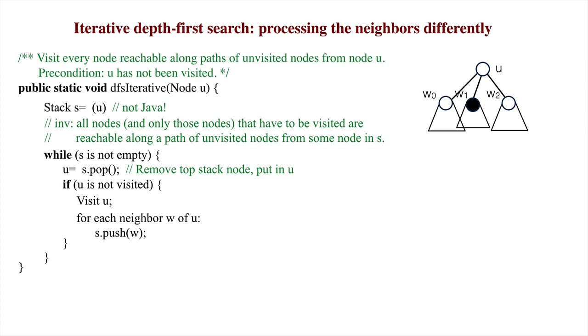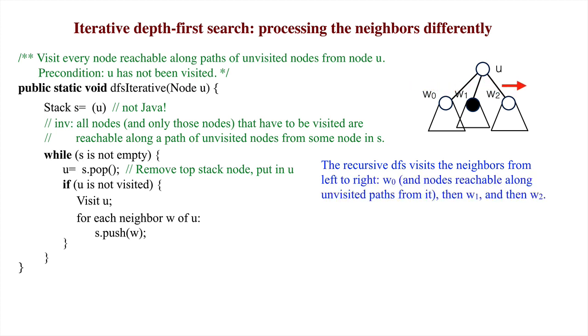We discuss two points about the stack. First, the recursive DFS visits the neighbors from left to right. First W0, and all nodes reachable along unvisited paths from it, then W1, then W2.